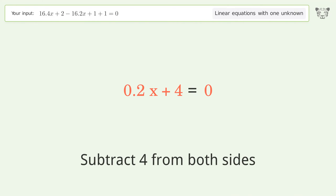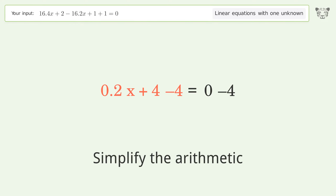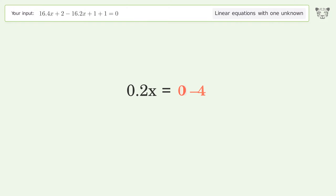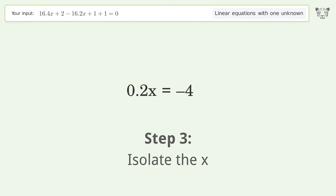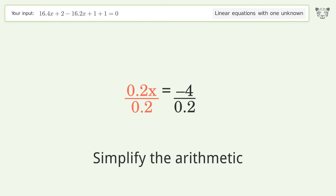Subtract 4 from both sides. Simplify the arithmetic. Isolate the x — divide both sides by 0.2. Simplify the arithmetic.